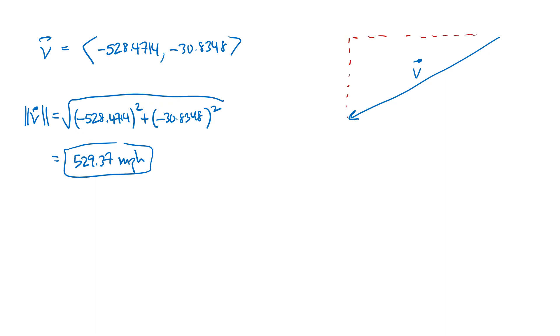And this time, we don't know the hypotenuse, we don't know the length of this vector, but what we do know are the x and y distances. We know that this x distance is 528.4714, and that this y distance is 30.8348. And what we're looking for is this mysterious angle theta, the bearing of the plane.